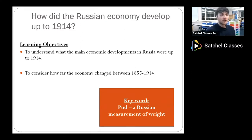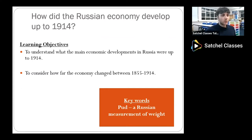What are our learning objectives for today's lesson? The first one is we are going to look at what the main economic developments were in Russia up to 1914. You will have looked at developments under Mikhail von Reuten and Ivan Vishnagradsky under Tsars Alexander II and III. Now in this lesson we're going to be looking at developments under Sergey Witte and Tsar Nicholas II up to 1914. The second learning objective is we're going to consider how far the economy changed between 1855 and 1914.